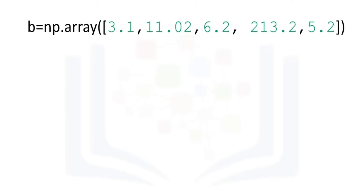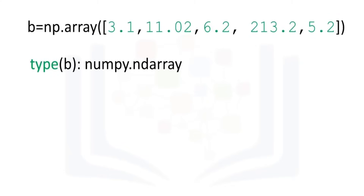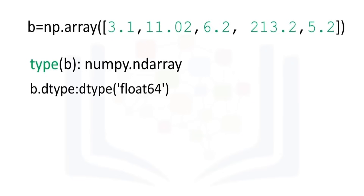The attribute shape is a tuple of integers indicating the size of the array in each dimension. We can create a NumPy array with real numbers. When we check the type of the array, we get numpy.ndarray. If we examine the attribute dtype, we see float64 as the elements are not integers. There are many other attributes — check out numpy.org.